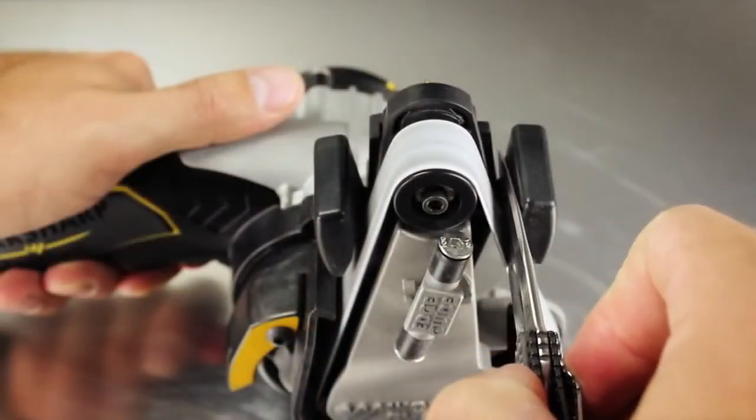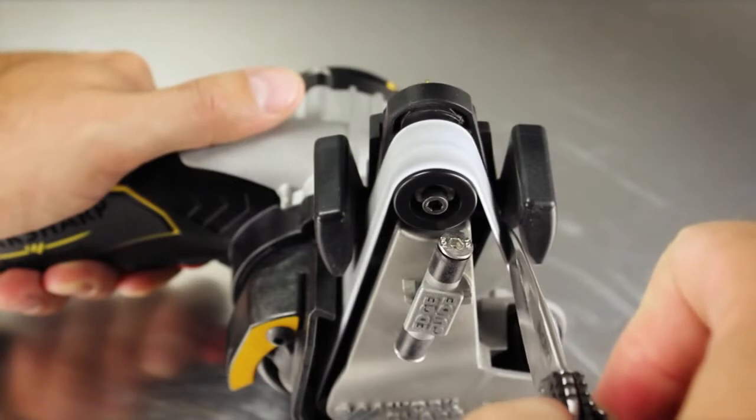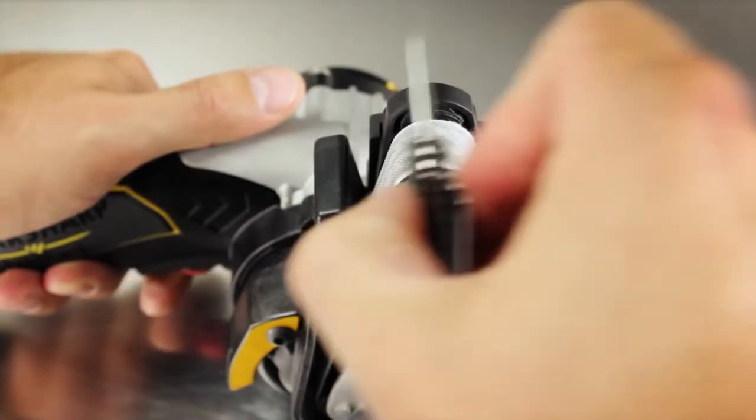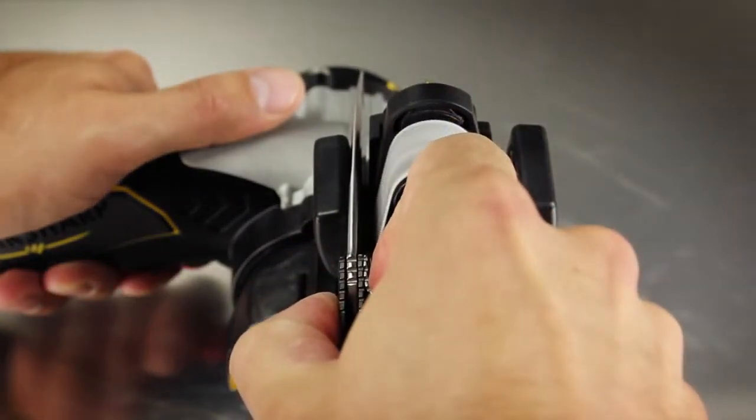Once the blade is sharpened, hone the edge using finer belts. For best results, use alternating strokes on each side of the blade.